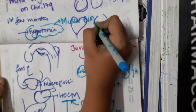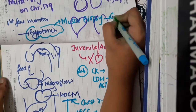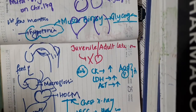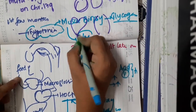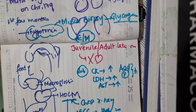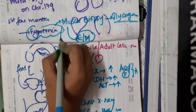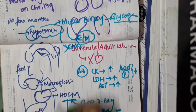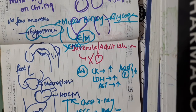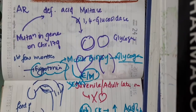On muscle biopsy, you will see accumulation of glycogen in the muscles. Under the electron microscope, you will see accumulation of glycogen in the membranous sacs of the cytoplasm. Electromyography can also be done, which will show features of irritability of muscle fibers and pseudomyotonic discharges.